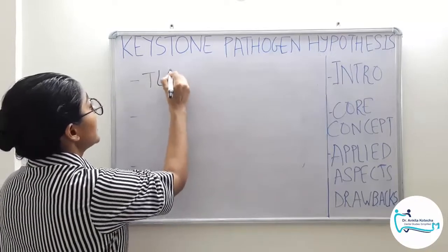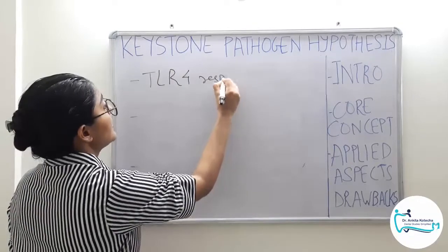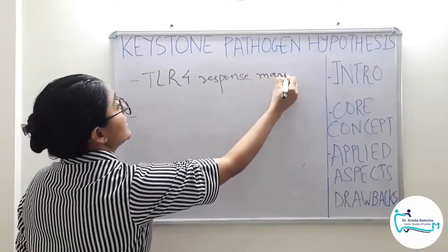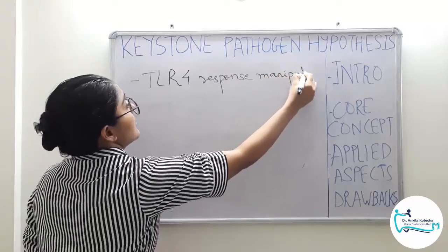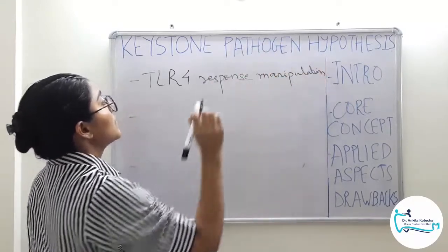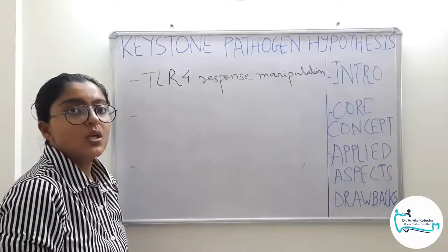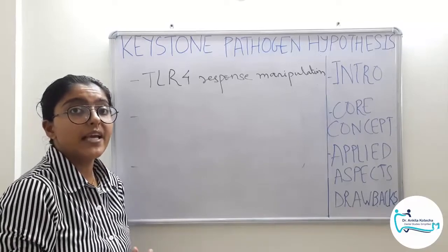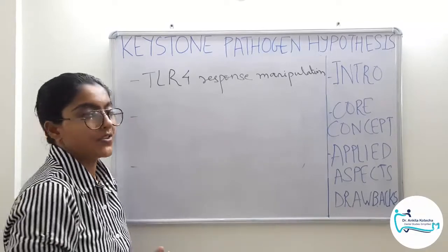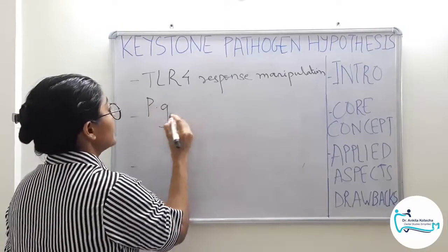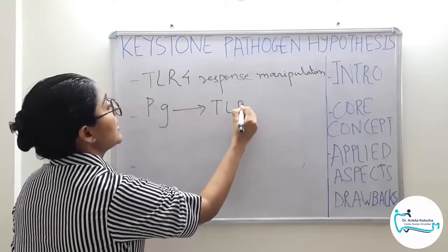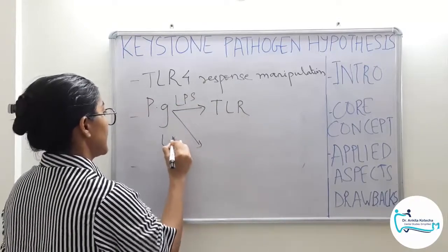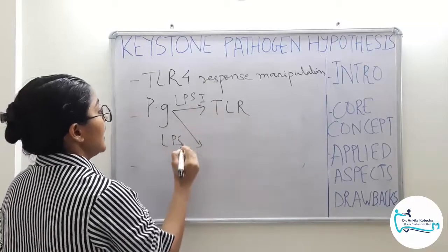To begin with, TLR-4 response manipulation. TLR stands for Toll-Like Receptor, and TLR-4 is number four in the series. Normally, TLRs upon receiving a stimulus will release mediators that carry forward the phenomenon of inflammation. But when P. gingivalis is present, it interacts with TLR-4 via lipopolysaccharide, which is its virulence factor. There are actually two types of lipopolysaccharides — Type 1 and Type 2.